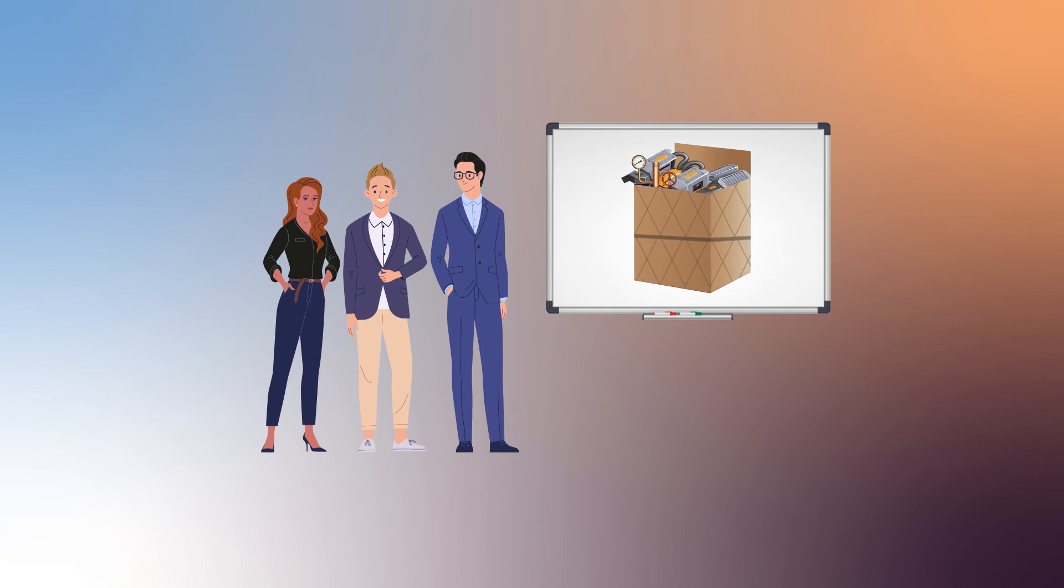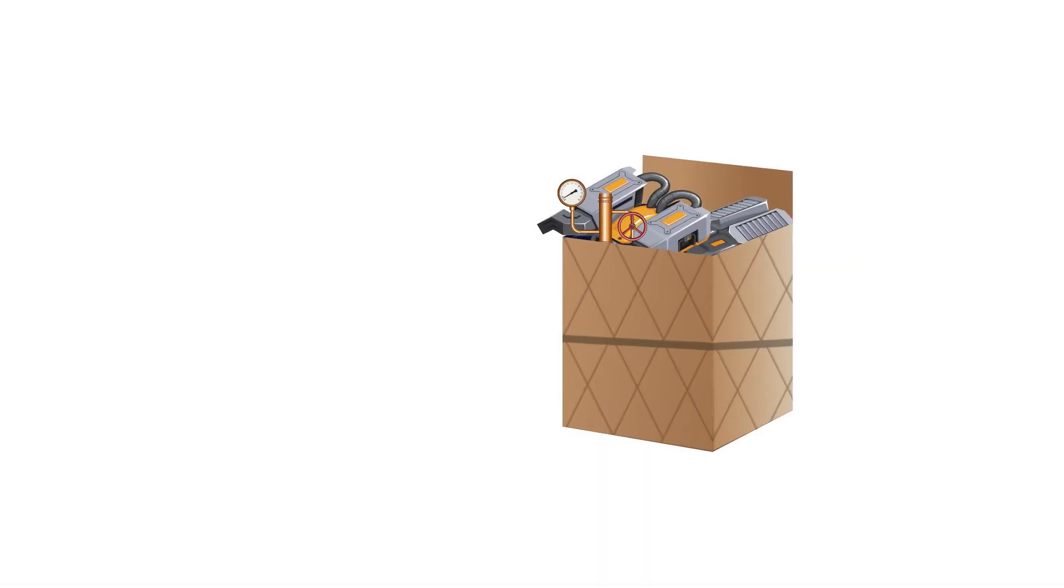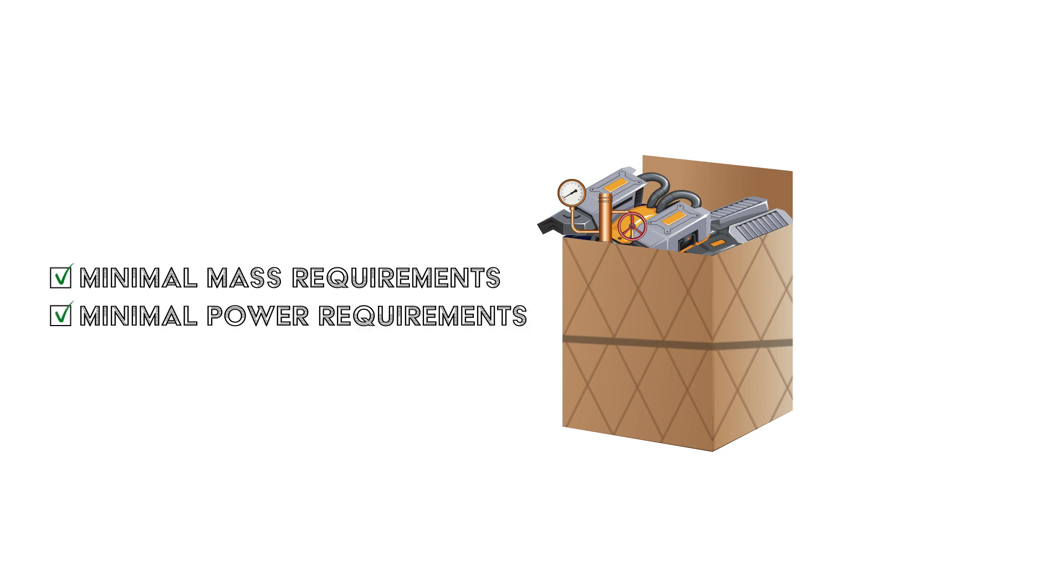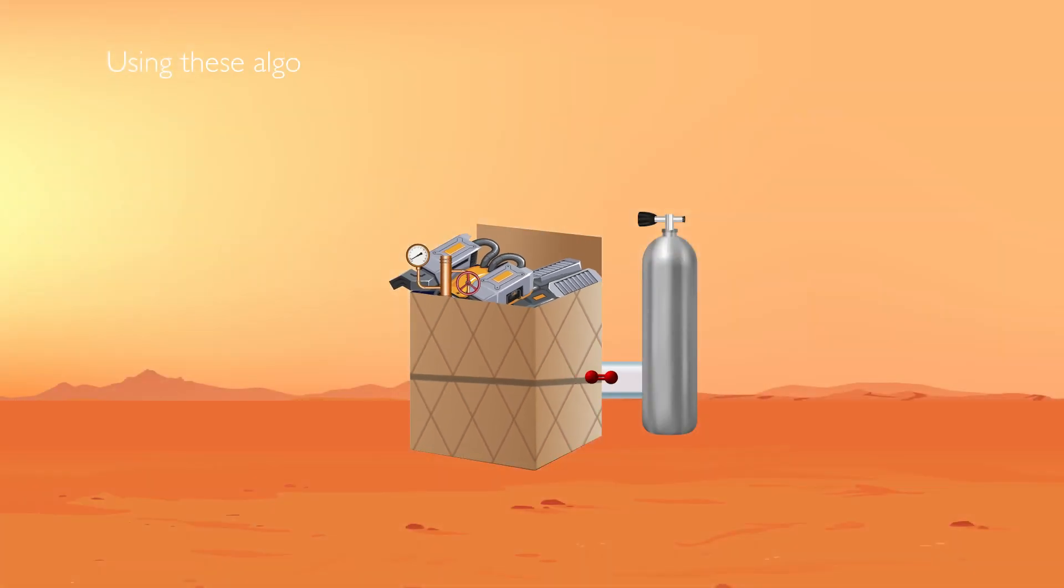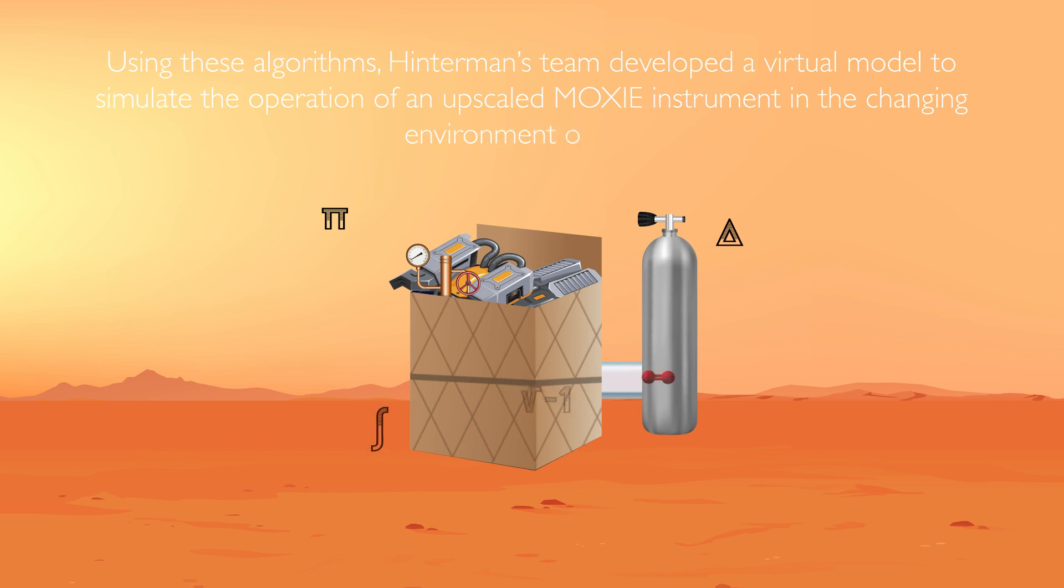Using advanced optimization algorithms, the researchers showed how such a system could operate as efficiently as possible, with minimal mass and power requirements. Their examination had many interlinking aspects to consider, including the power, electronics and heat exchange systems needed to convert atmospheric carbon dioxide into liquid oxygen. Using these algorithms, Hinterman's team developed a virtual model to simulate the operation of an upscaled MOXIE instrument in the changing environment of Mars.